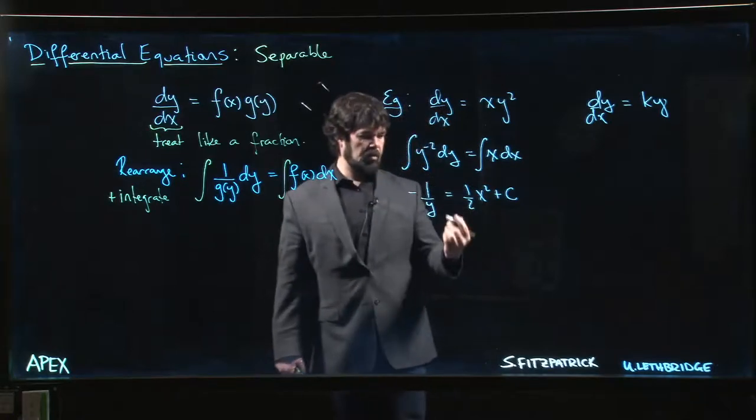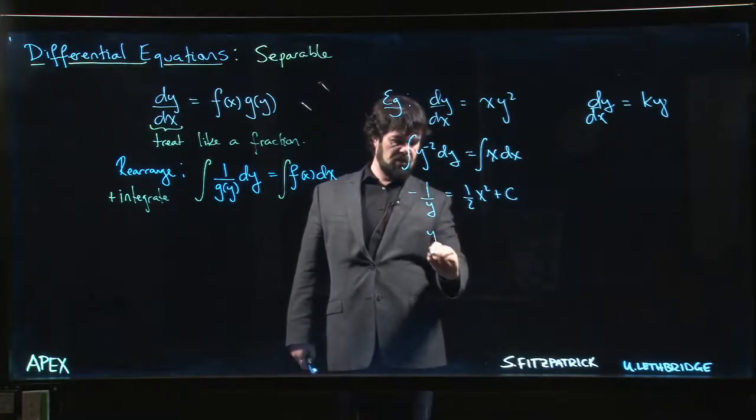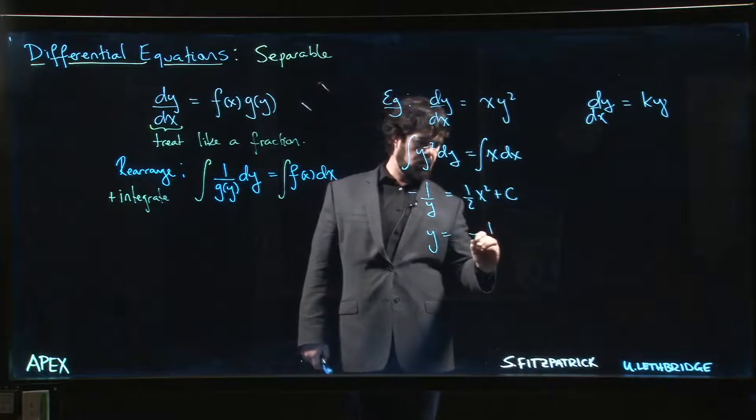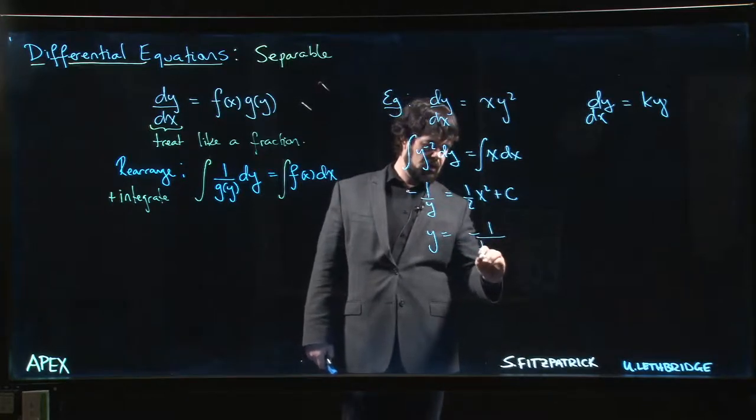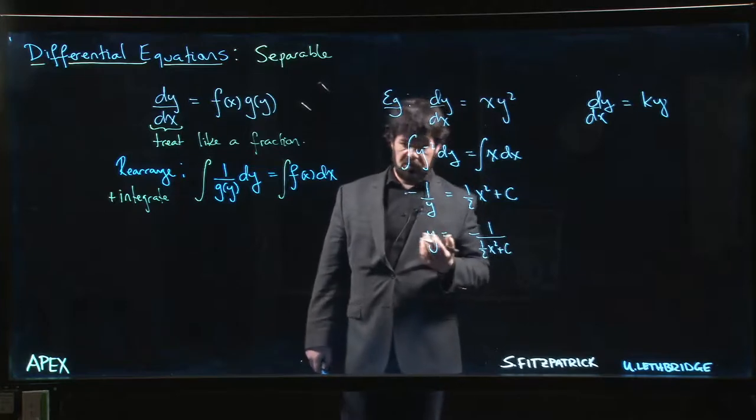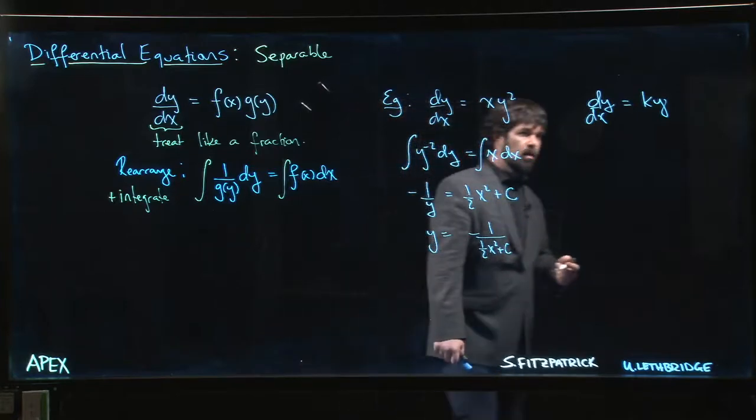Let's see, plus a constant. And probably you want to solve for y, so you take the reciprocal of both sides, get rid of that minus sign, and you get something like y equals -1 over (½x² plus a constant).